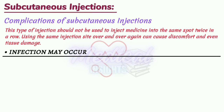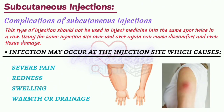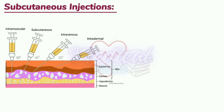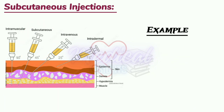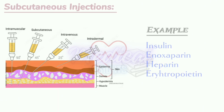Infection may occur at the injection site, causing severe pain, redness, swelling, warmth or drainage. The injection angle should be 45 degrees. Some common examples for subcutaneous injections are insulin, enoxaparin, heparin and erythropoietin.